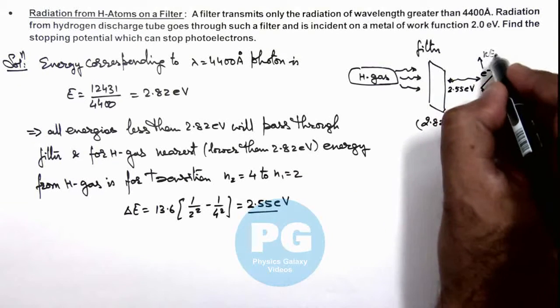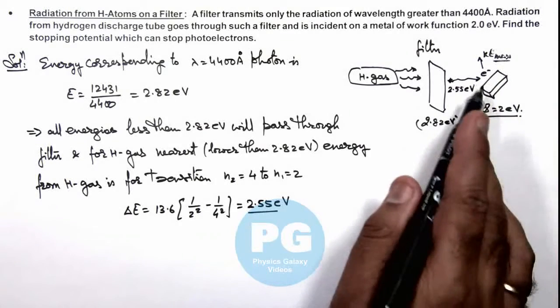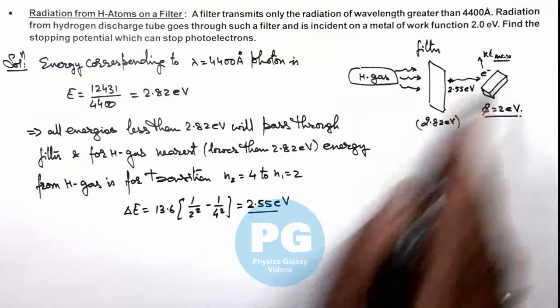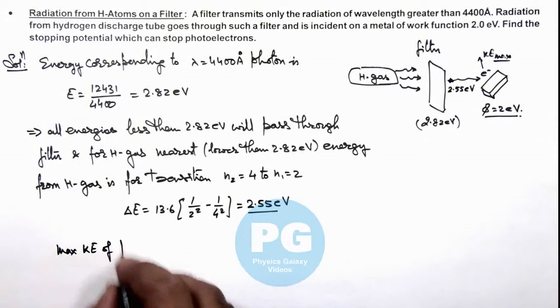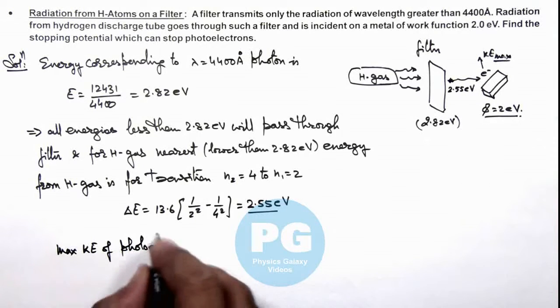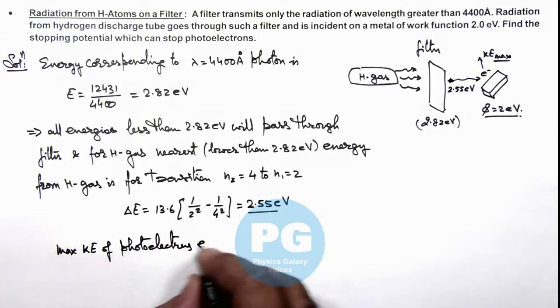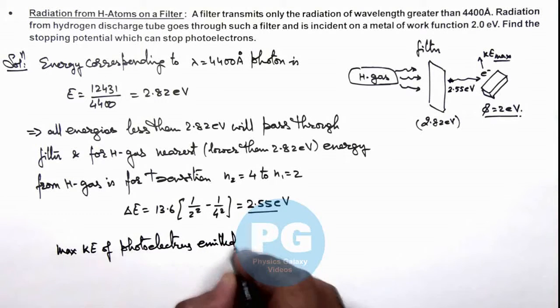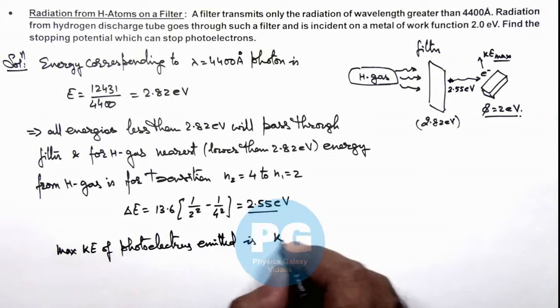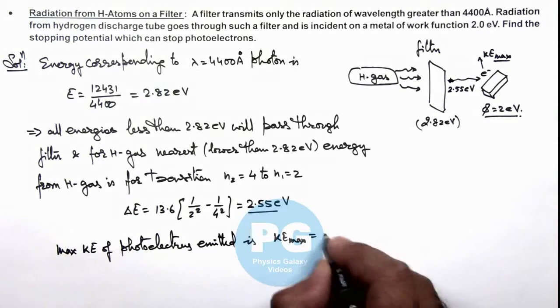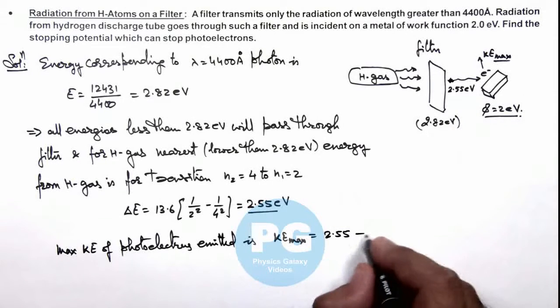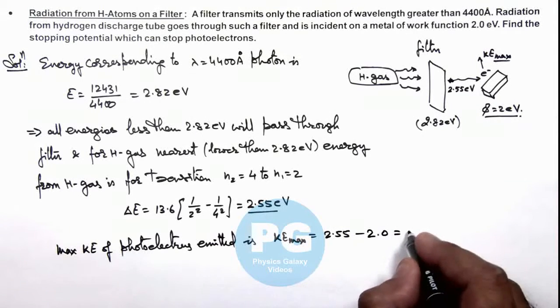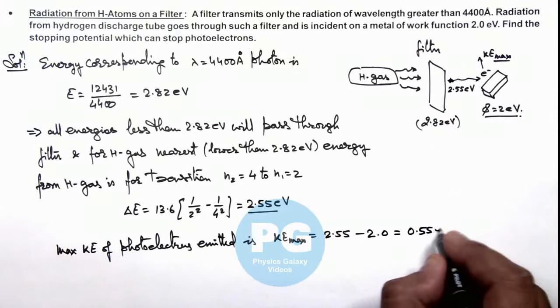The maximum kinetic energy of electrons emitted from the metal surface—the maximum kinetic energy of photoelectrons emitted—KEmax can be given as 2.55, which is the incident energy, minus the work function which is 2.0, that is equal to 0.55 electron volts.